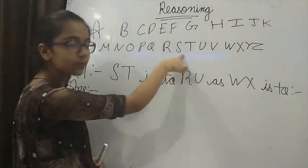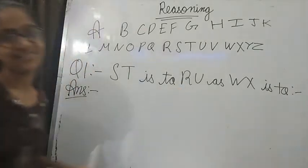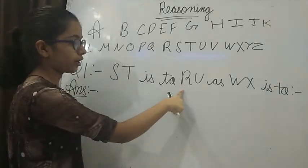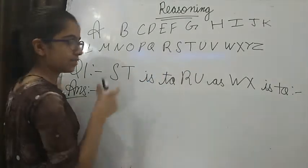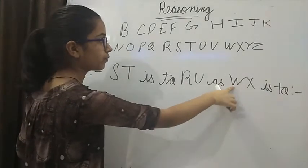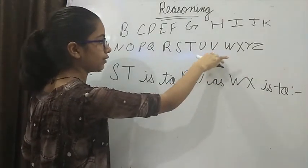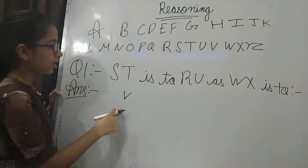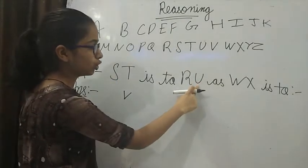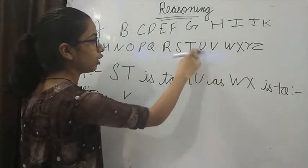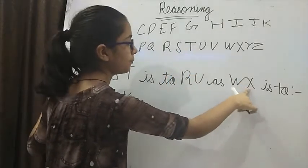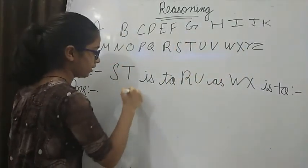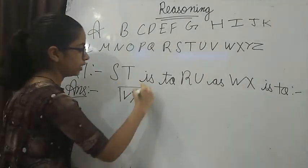ST is written here. In the place of S they have written R because R comes before S. Same way, before W they have written V. So firstly we will write V. In place of T they have written U and U is after T. In the same way here, after X there is Y. So here we will write Y. So our answer is VY.